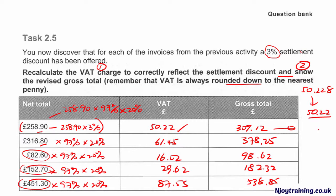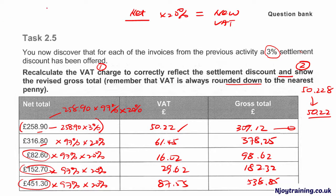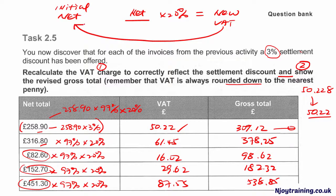To recap: you always work out the new net amount to be used to calculate your VAT, then multiply by 20% to get your new VAT. The initial net amount is then added back to get your new gross amount. I hope that is clear.